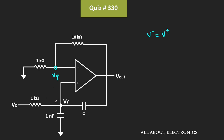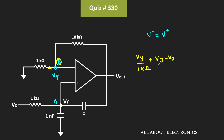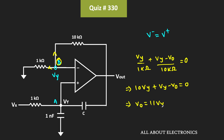Now let's say this node is equal to node A while this node is equal to node B. So first of all, let's apply the KCL at node B. Applying the KCL, we can write: Vy divided by 1 kilo ohm plus Vy minus Vout divided by 10 kilo ohm equals 0. Or we can say that 10 times Vy plus Vy minus Vout equals 0. That means Vout is equal to 11 times Vy. Let's say this is equation number 1.